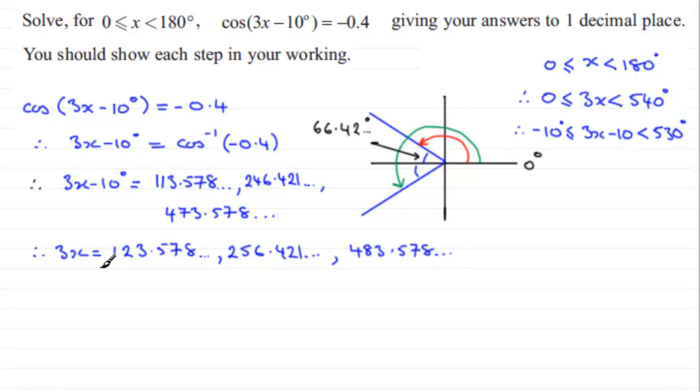Now I divide each one of these by three to get x. And if I do that for the first one I get 41.192 and so on. Next one, dividing that by three gives me 85.473 and so on.